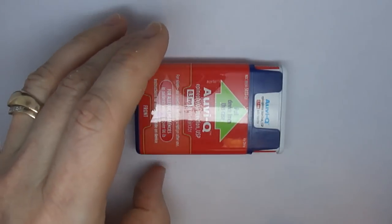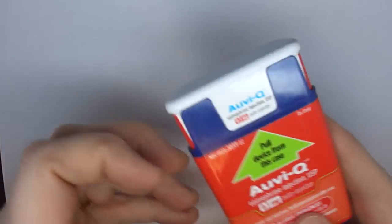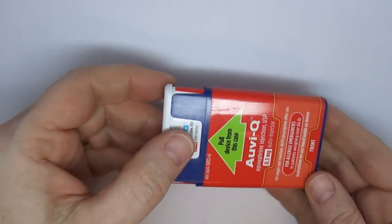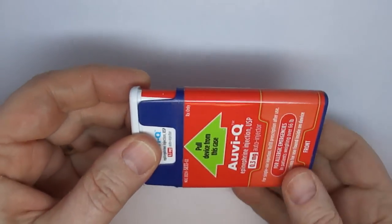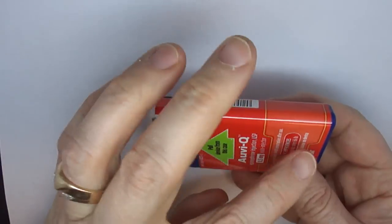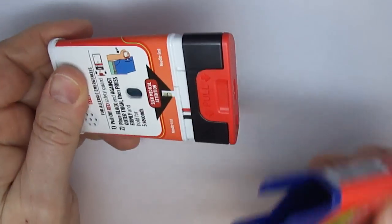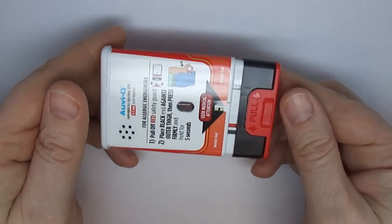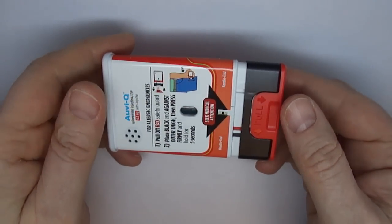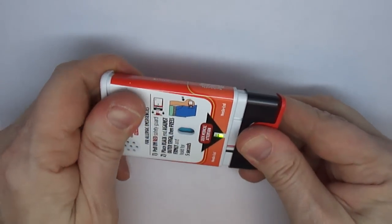So to begin, this is an unused device and I'm going to remove the outer case only briefly because it talks to you when we do, but I just want to show you the activation mechanism in an unused device. Pull off red safety guard. So we're going to pull off the safety guard.